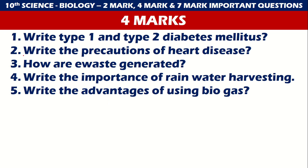Questions 26 to 30: Type 1 diabetes and type 2 diabetes mellitus. Write precautions for heart diseases. Write how heat waste is generated. Write the importance of rainwater harvesting. Write the advantages of using biogas. These are the top 30 questions for 4 marks in biology.